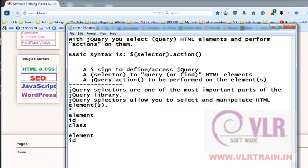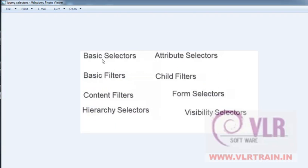Basically, we have many types of selectors: basic selectors, attribute selectors, basic filters, child filters, content filters, form selectors, and visibility selectors.